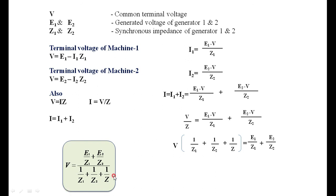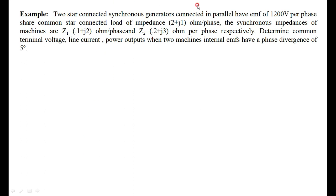Now we will look into a numerical example on parallel operation. Two star-connected synchronous generators are connected in parallel with an EMF of 1200 V per phase. Z1, Z2, and load impedance Z_L are given. Determine the common terminal voltage, line current, and power outputs when the two machines have an internal phase divergence of 5 degrees between E1 and E2.